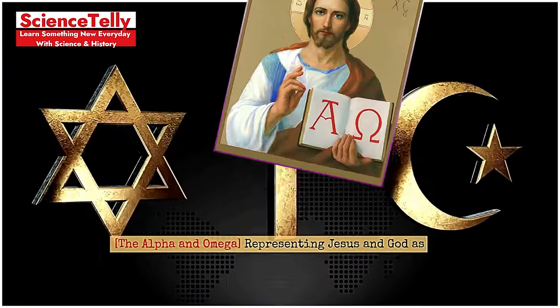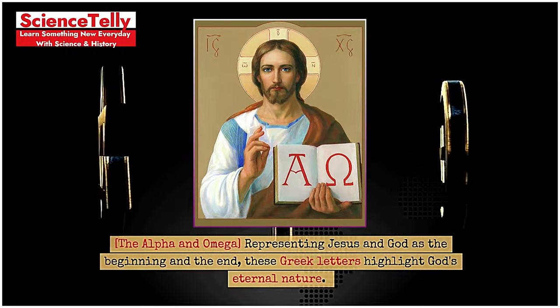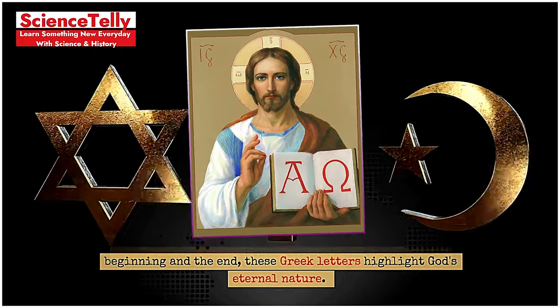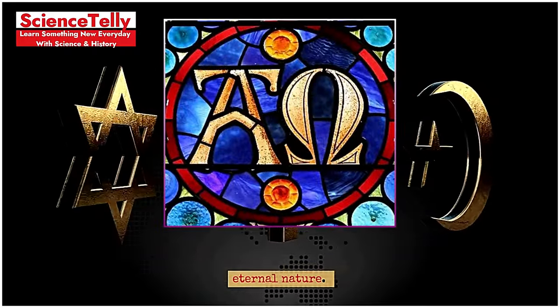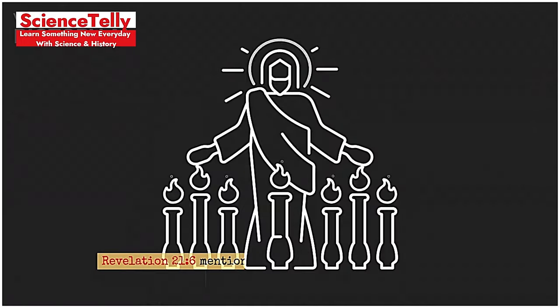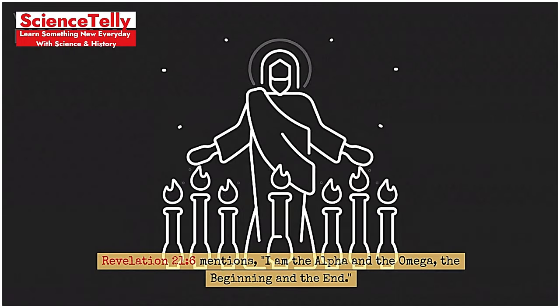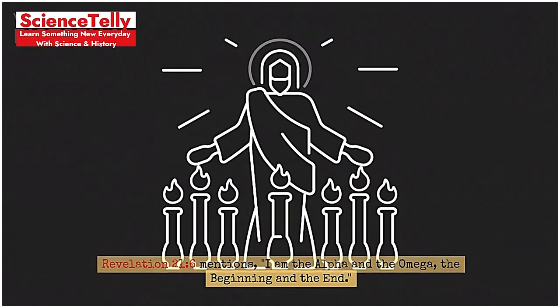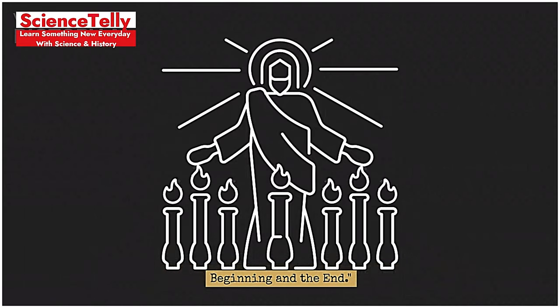The Alpha and Omega, representing Jesus and God as the beginning and the end. These Greek letters highlight God's eternal nature. Revelation chapter 21 verse 6 mentions, 'I am the Alpha and the Omega, the beginning and the end.'